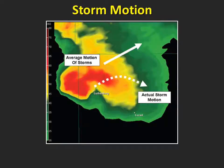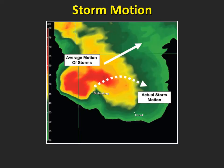You should never assume that the storm you're observing will move in the same direction as it is now, or that the speed of motion will remain the same. This is especially true with supercell thunderstorms, which frequently turn or move to the right of the direction they've been traveling. And sometimes supercells will even split into two storms, with one moving quickly to the north and the other moving southeast. It's critical that you have current information about the motion and behavior of storms in your area, and use this information to avoid the most dangerous parts of the storm.